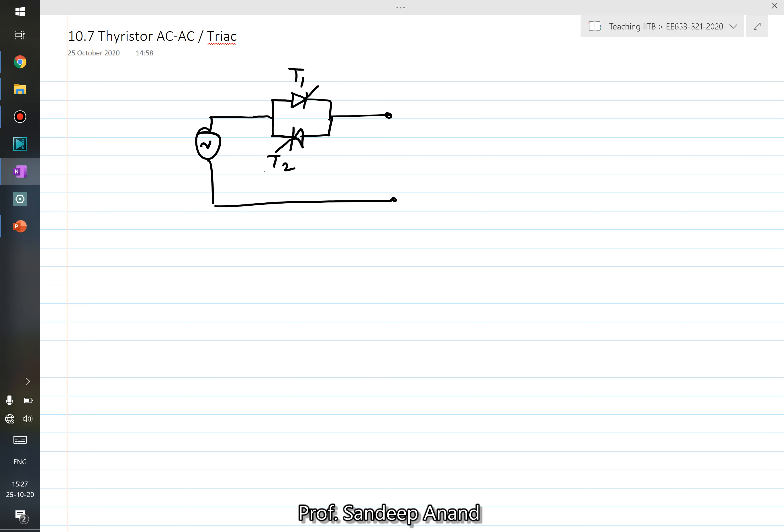This combination of anti-parallel connection of SCRs is sometimes known by different names by different people working in power electronics. It is also called as some people would call it as a static switch, because this could be very well used as an AC switch and static in nature, there is no mechanical part.